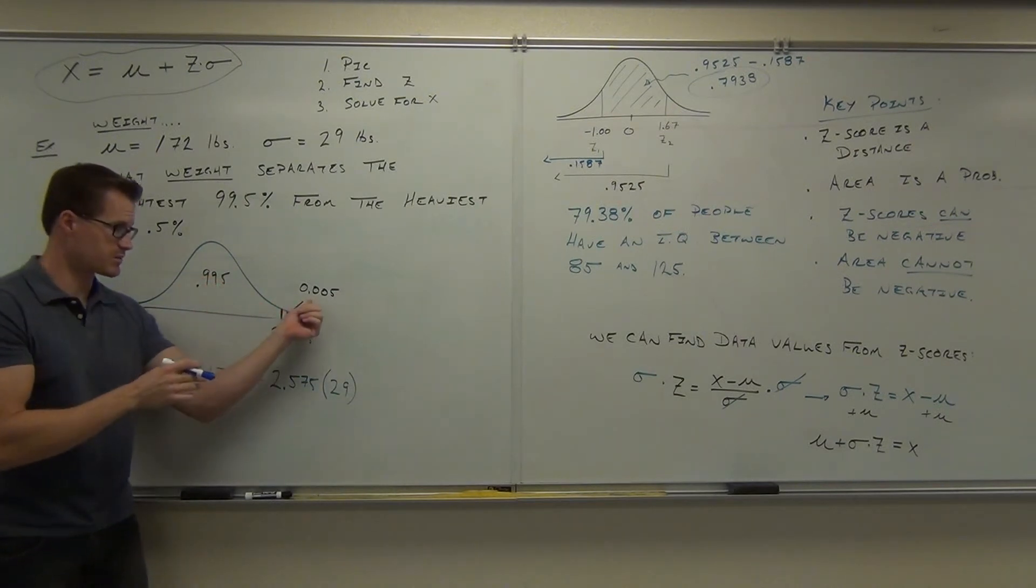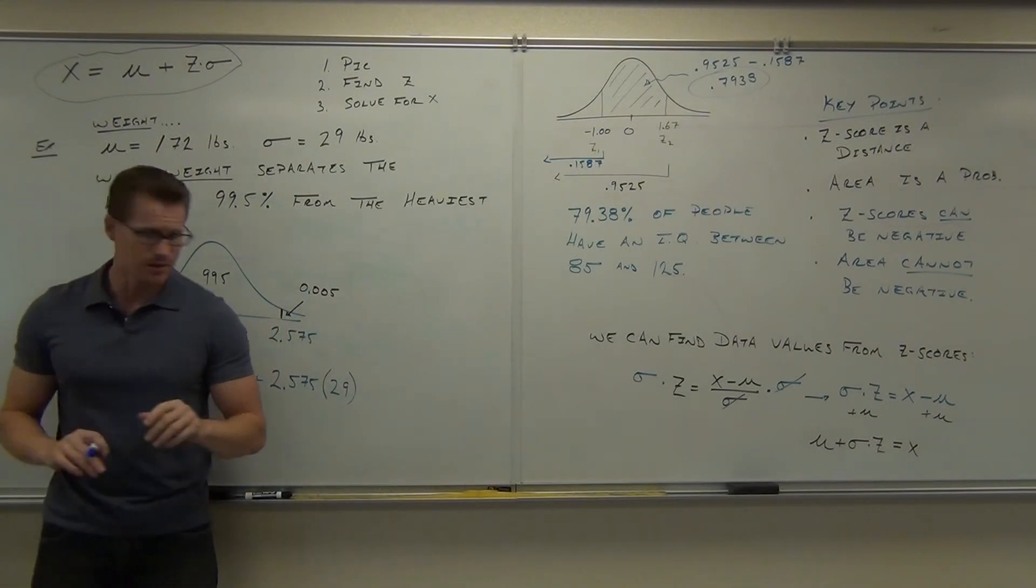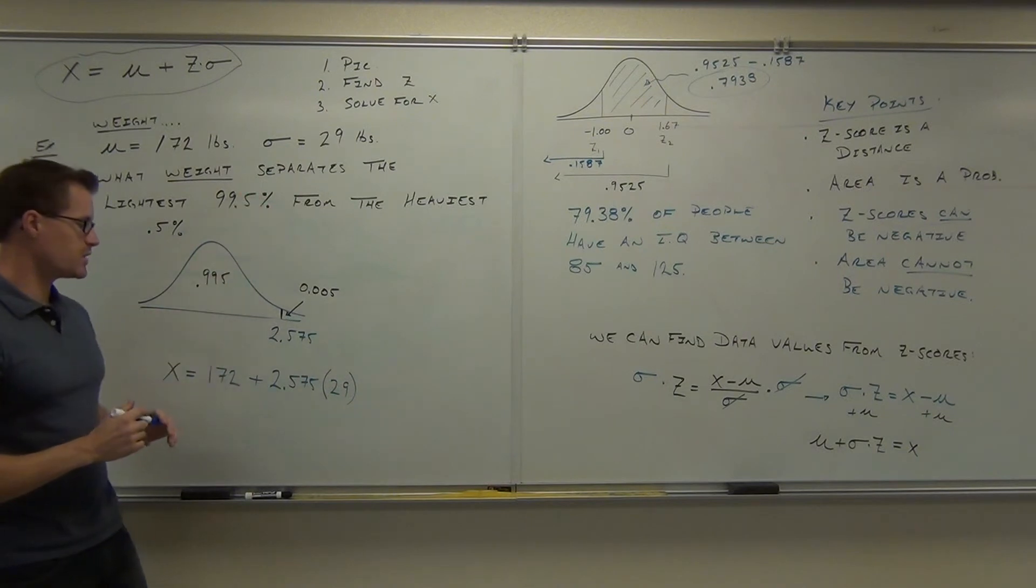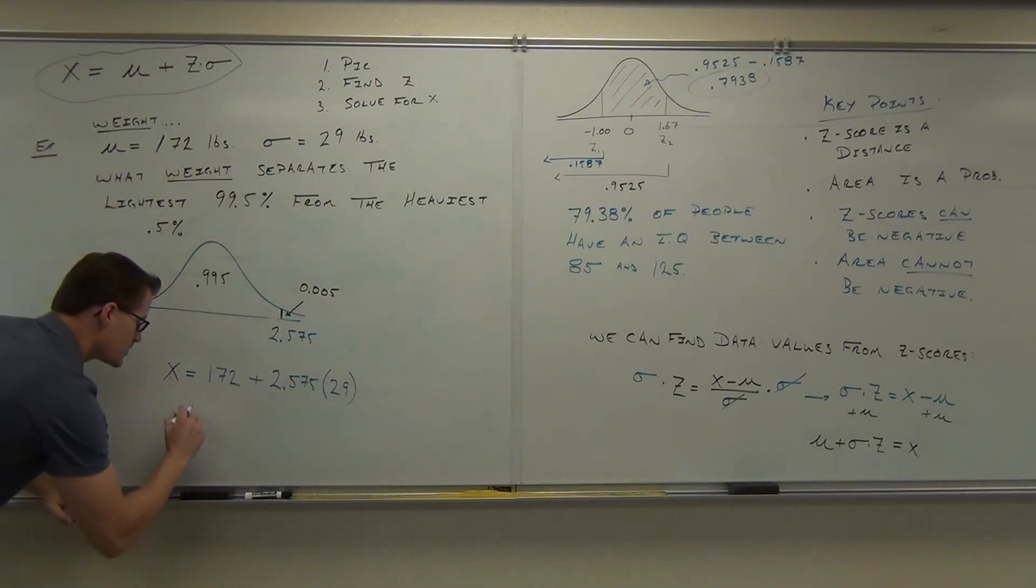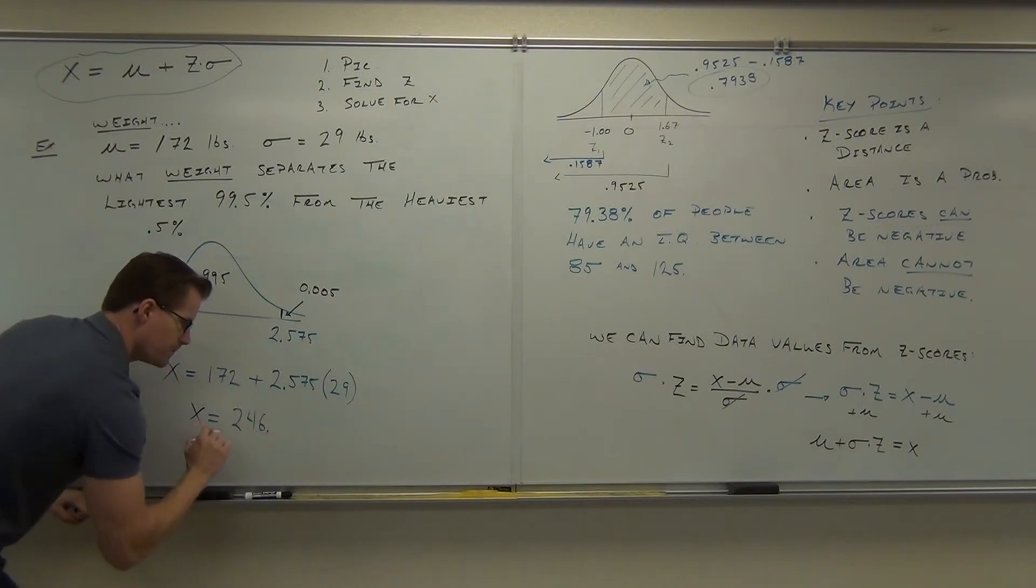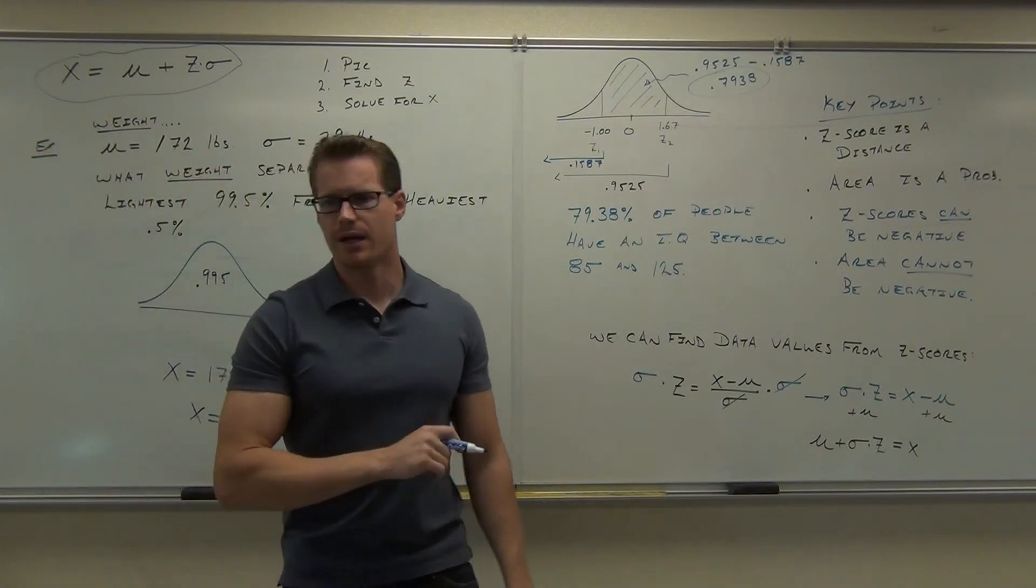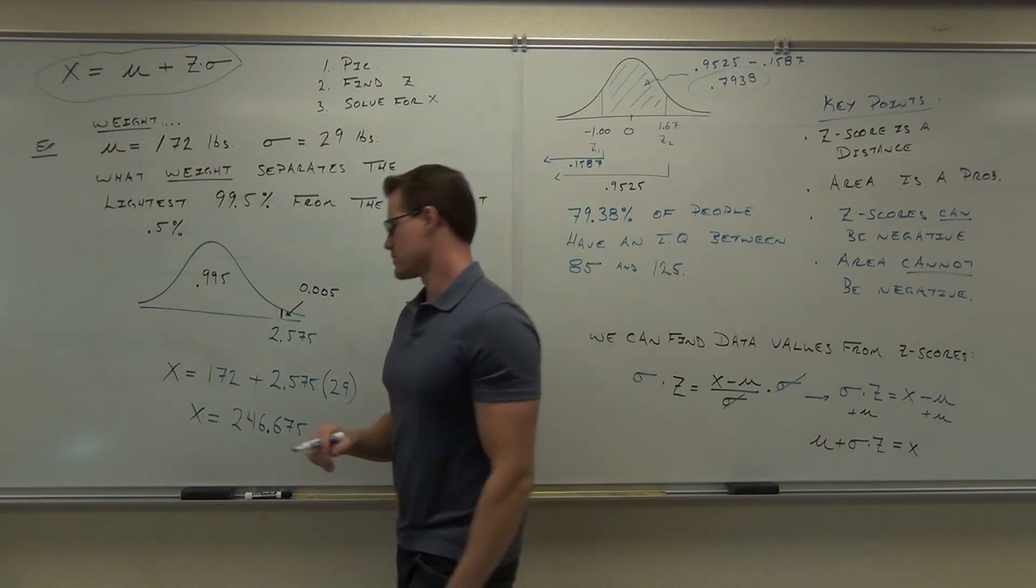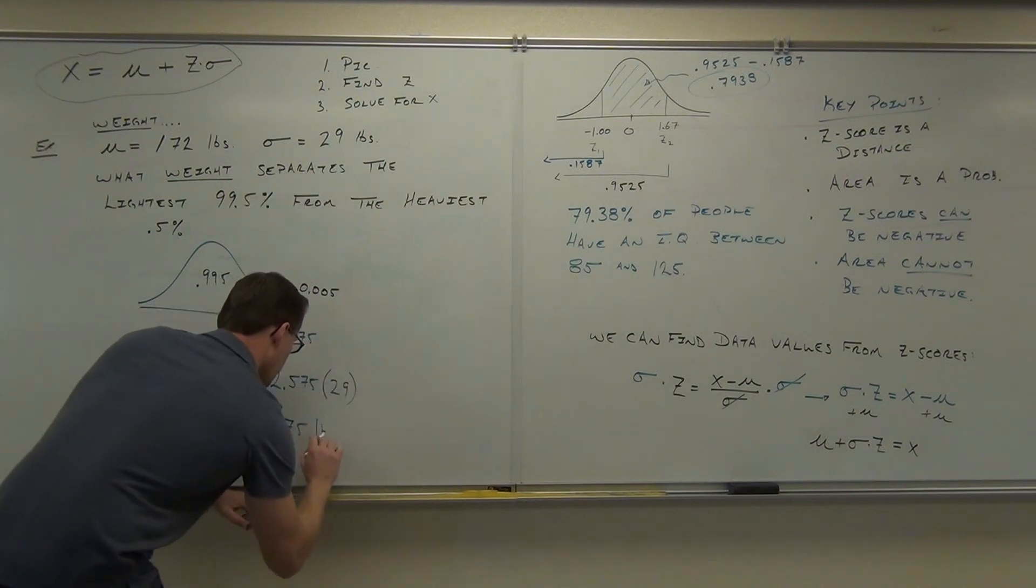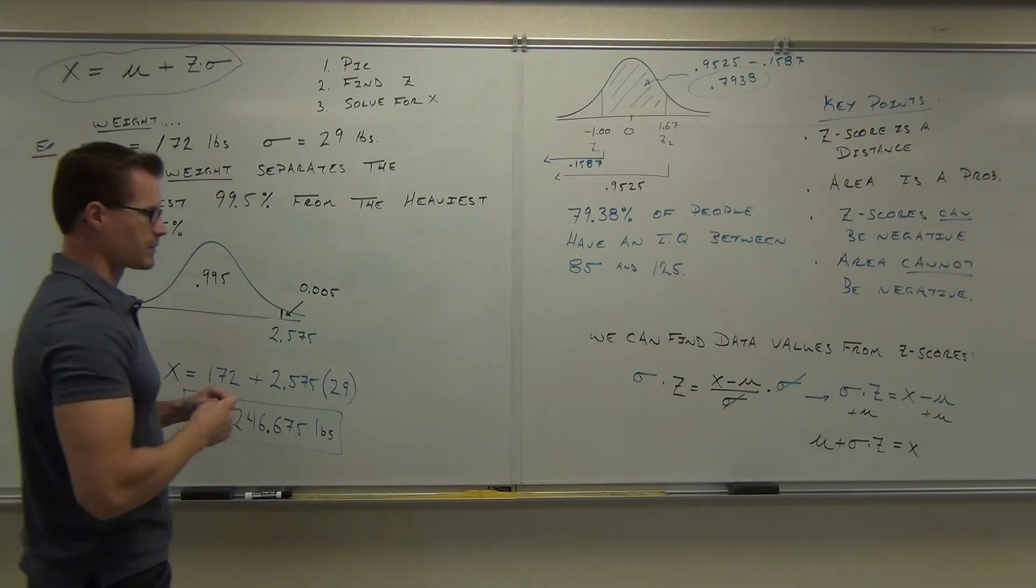Otherwise, if you actually look at this, 0.005, you get negative 2.575, that would not give you the correct thing, times 29 which is given to you. Okay, have you done the work yet? How much is your x? 246.675. What is that? What's the units for that? That's pounds.